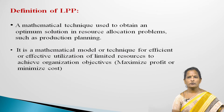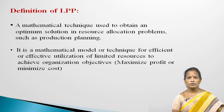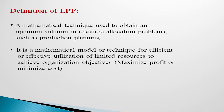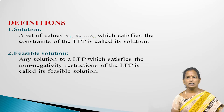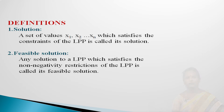Definition of Linear Programming Problem: The mathematical technique used to obtain an optimum solution in resource allocation problems such as production planning. It is a mathematical model or technique for efficient and effective utilization of limited resources to achieve organizational objectives — maximize profit or minimize cost. Solution: A set of values x1, x2, ..., xn which satisfies the constraints of the LPP is called its solution.